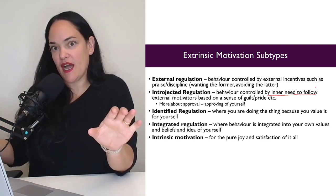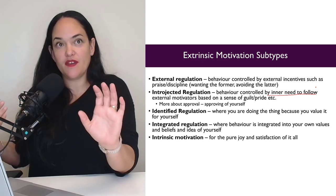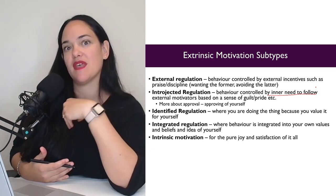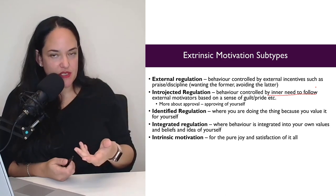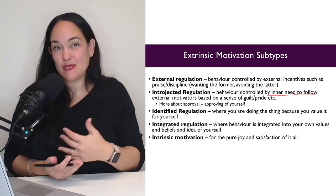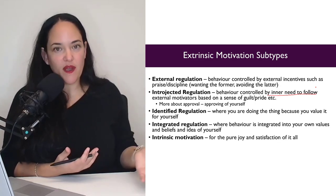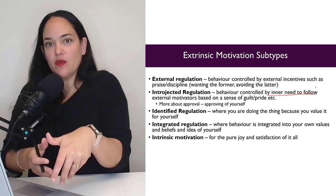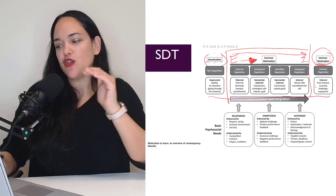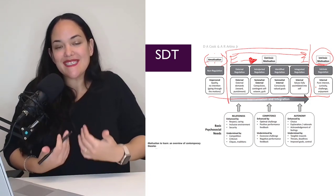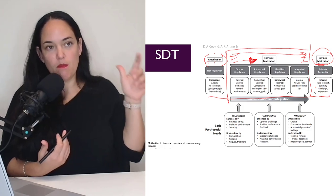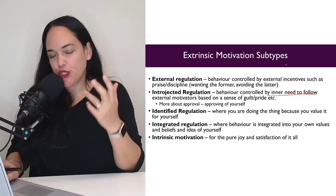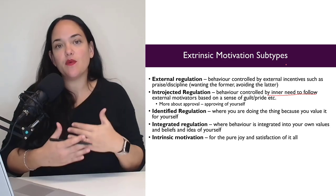Introjected regulation is the inner need to follow external motivators based on a sense of guilt or pride. External regulation is driven by praise and punishment, while introjected regulation involves identifying with that praise or punishment — feeling like 'I'm a better person when people like my posts.' You follow a behavior because you either want that praise or want to avoid punishment based on how it reflects on your sense of self.